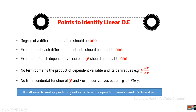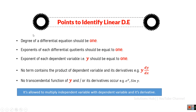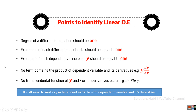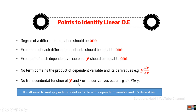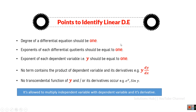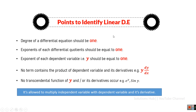All these points together define what makes a differential equation linear. If you check all these points on a differential equation and all are satisfied, the equation is called linear. If any one of these points fails, the equation is called a nonlinear differential equation.